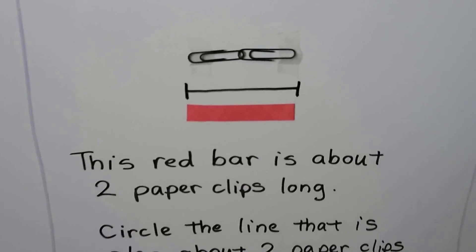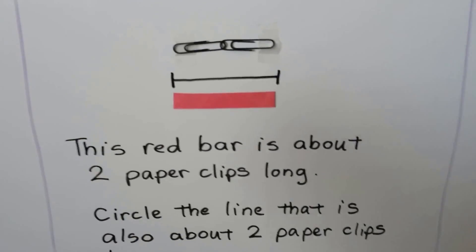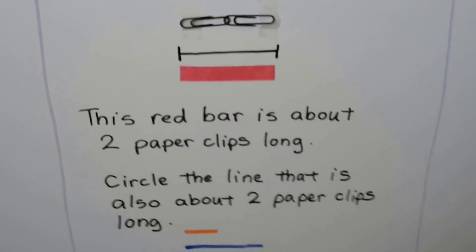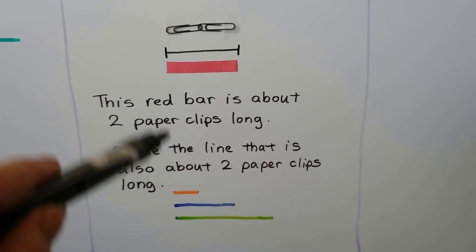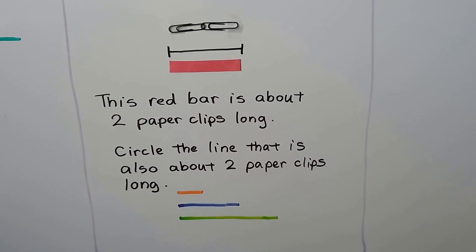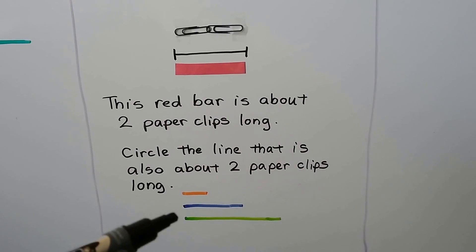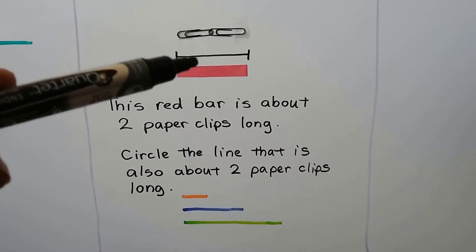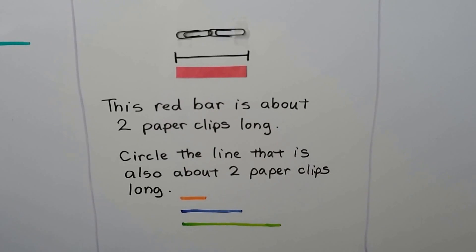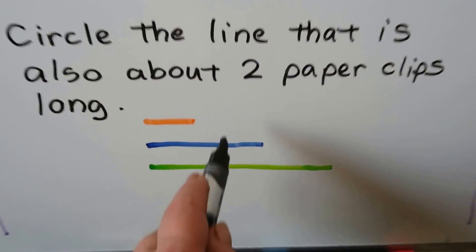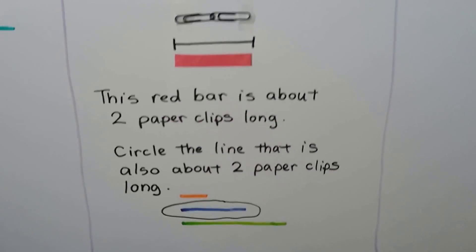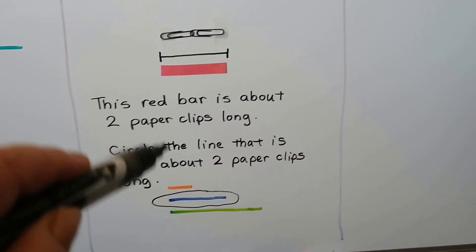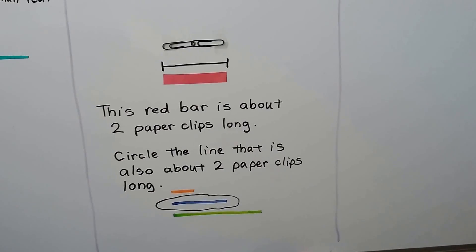This red bar is about 2 paperclips long — one, two. Circle the line that is also about 2 paperclips long. We can use our eyes and come down to see how they line up. Is it the orange line, the blue line, or the green line that is about the same length as this red bar and about 2 paperclips long? If you said the blue one, you're right — it's about 2 paperclips long. When we use our eyes to line them up, we can see they're about the same length.